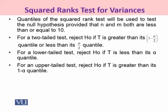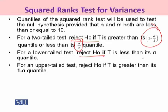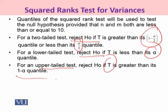These T values are tested against their critical regions. For a two-tailed test, reject H₀ if T is greater than the (1 − α/2) quantile or less than the α/2 quantile. For a lower-tailed test, reject H₀ if T is less than the α quantile. For an upper-tailed test, reject H₀ if T is greater than the (1 − α) quantile. This is the required procedure for testing equality of variances using the scored rank test.